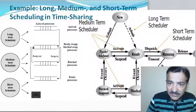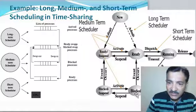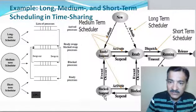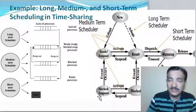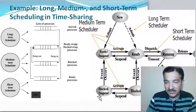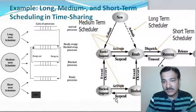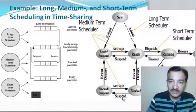You can see here — all these lines — whenever the process is blocked and it is copied to the blocked suspended state, it is copied to the secondary memory. That is done by the medium term scheduler.